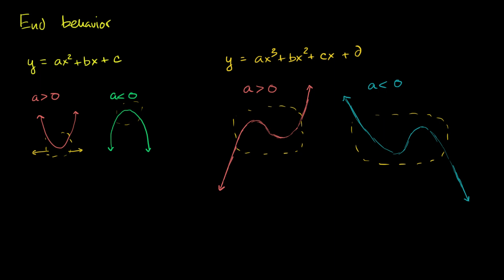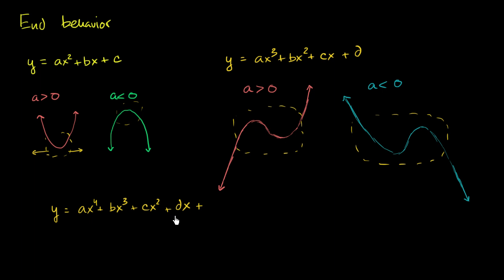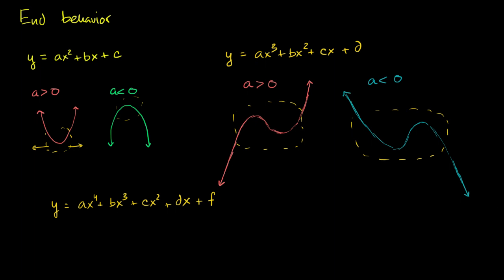So let's think about the situation of a fourth degree polynomial: y is equal to ax to the fourth power plus bx to the third plus cx squared plus dx plus f — where f is just a constant. Let's think about what this might look like, and consider its end behavior relative to a second degree polynomial.